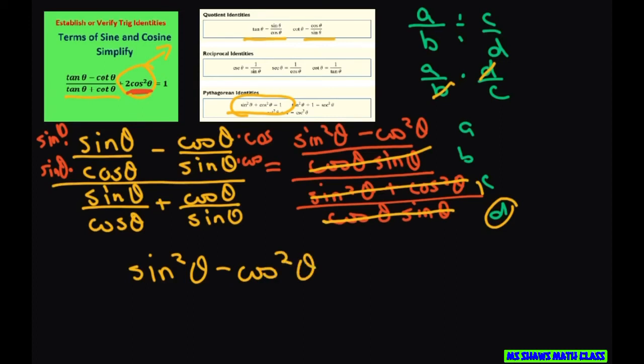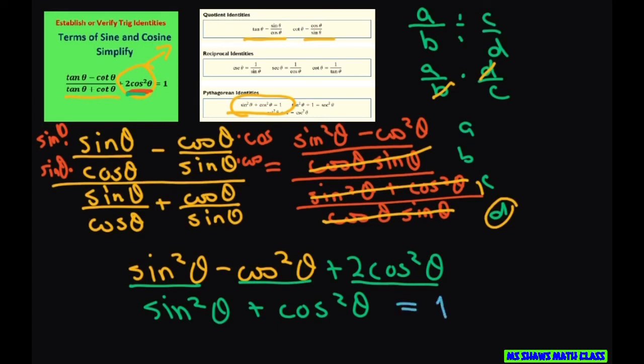Now we're going to go ahead and add our 2 cosine squared theta. So what we have is sine squared theta, and 2 cosine squared minus 1 is just 1 cosine squared theta. And again, according to our Pythagorean identities, this equals 1.